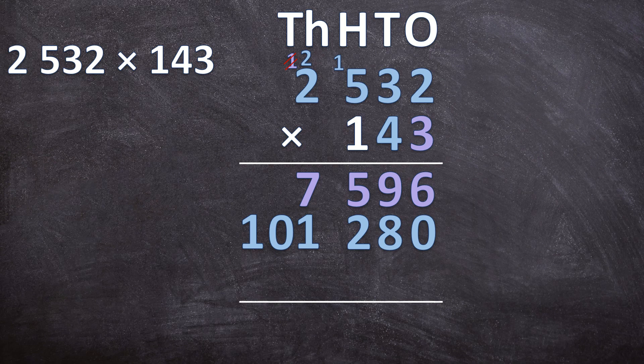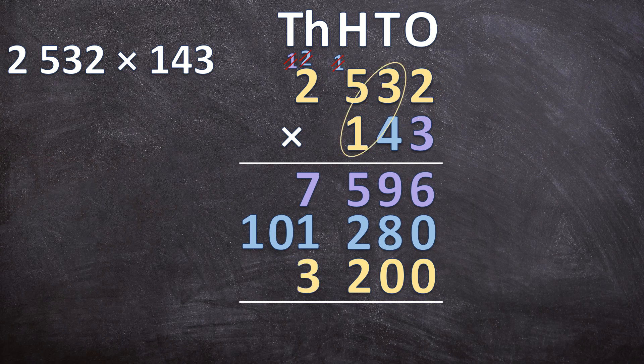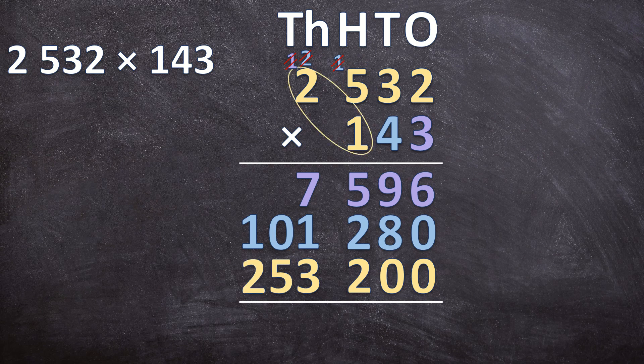Now we multiply 100 times 2532. Cancel all the carried numbers and add two zeros in the answer line because we're multiplying by 100, not by 1. Now multiply the digits: 2 times 1 is 2, 3 times 1 is 3, 5 times 1 is 5, and 2 times 1 is 2. So 100 times 2532 is 253,200.